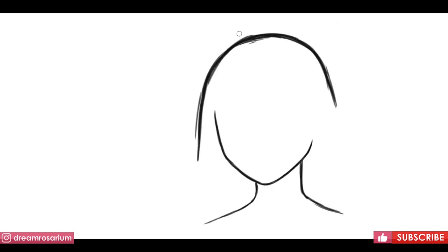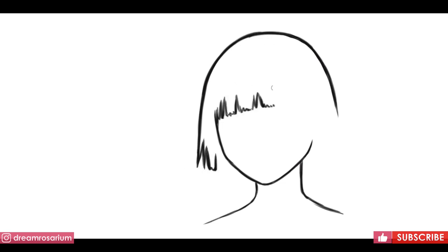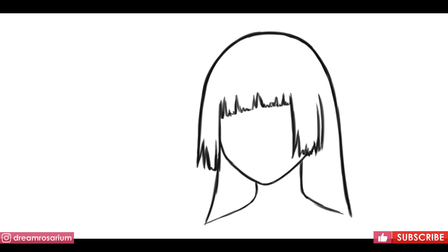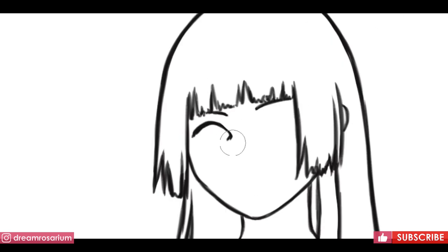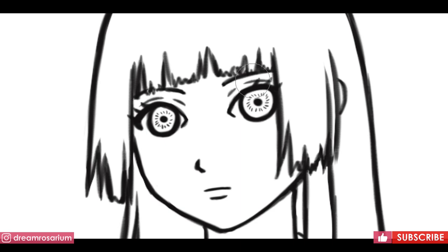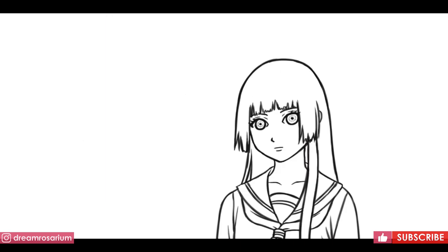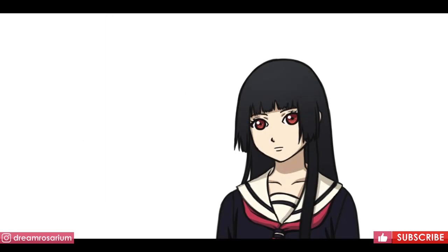Alright, now let's look at some examples. Enma from Hell Girl was the first character that came to my mind as I was doing my research for this video. As you can see, she has long straight hair. It's actually called a Hime cut, which means princess cut in Japanese.